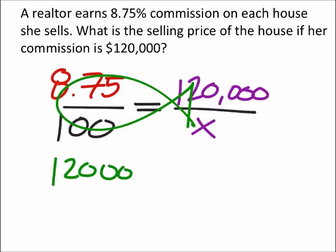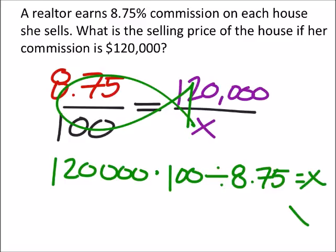I got 120,000 times 100, then divided by 8.75 equals my X. So I'm going to plug this directly into my calculator to give myself a lot of space to write this extremely large number. And divided by 8.75.